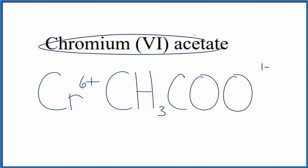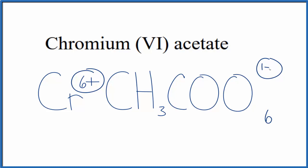The whole chromium(VI) acetate compound is neutral, it doesn't say ion after it. So the 6+ and 1- need to add up to zero, giving us a net charge of zero. So if we had 6 of these acetate ions, each one is 1-, 6 times 1- is 6-, that balances the 6+.